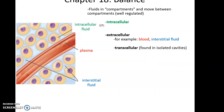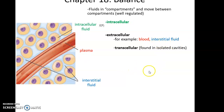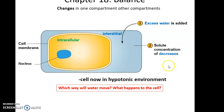Water is found in many different compartments - many different somewhat separate regions within the body - and water is able to move between those regions, as do many solutes, so we need this movement to be regulated. Compartments include intracellular (inside our cells), extracellular (outside the cells, including blood plasma and interstitial fluids surrounding the cells), and transcellular extracellular regions, which are slightly more isolated cavities.